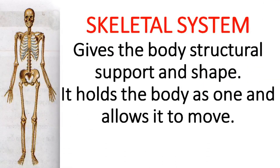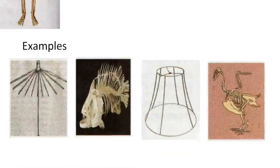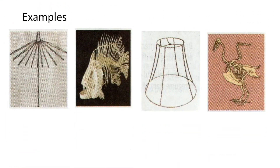The skeletal system gives the body structural support and shape. It holds the body as one and allows it to move. Examples are the framework of an umbrella, fish, and ostrich.